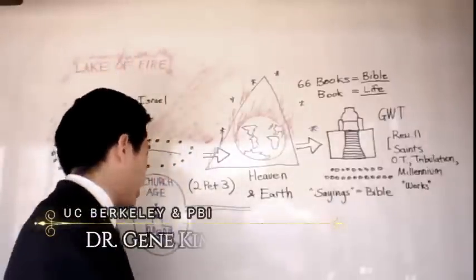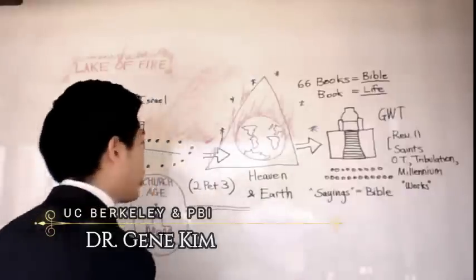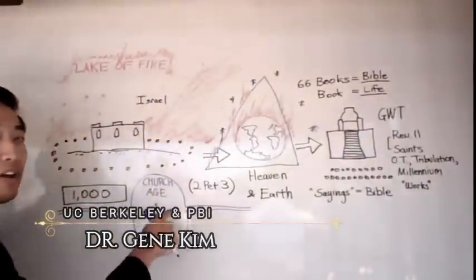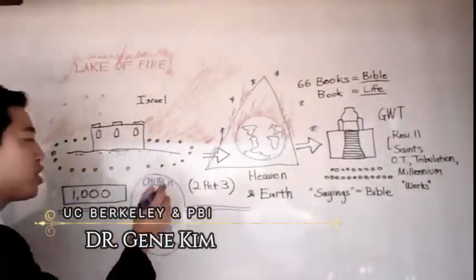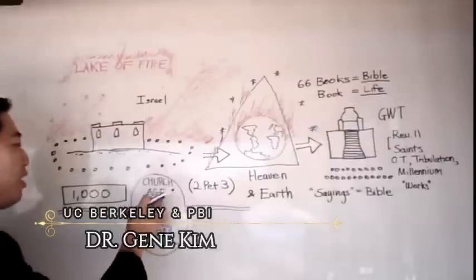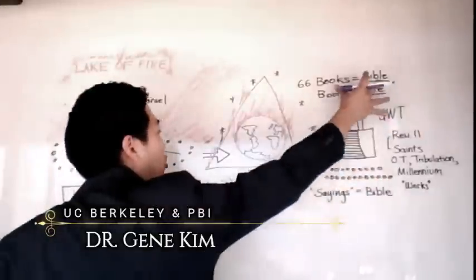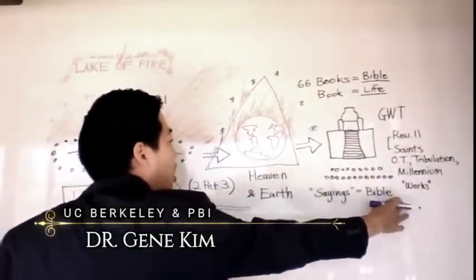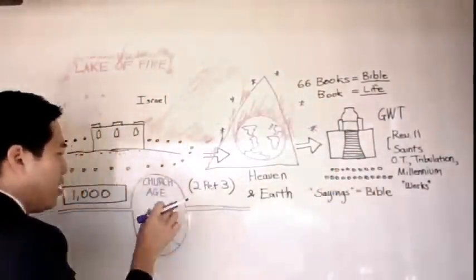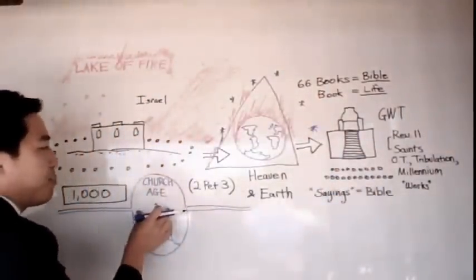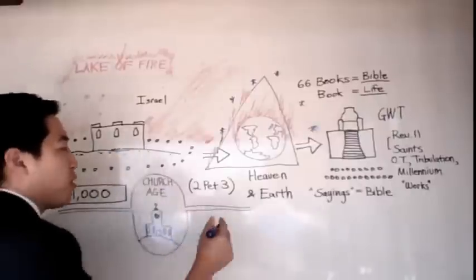Verse 2, 1 Corinthians chapter 6, verse 2. So the church age here, see this? I don't know if you can see the picture, but if you see something purple, the church is separate from all these people here. The saved and lost people here, right? The church is a separate saved people over here.